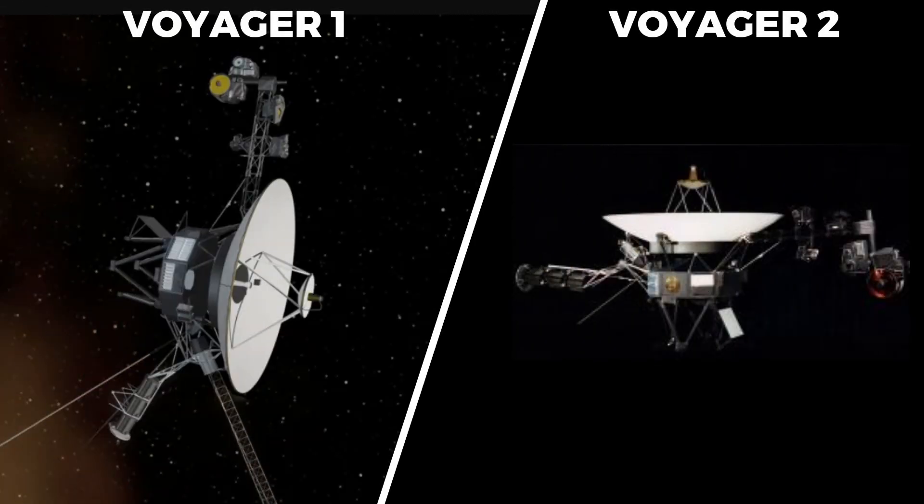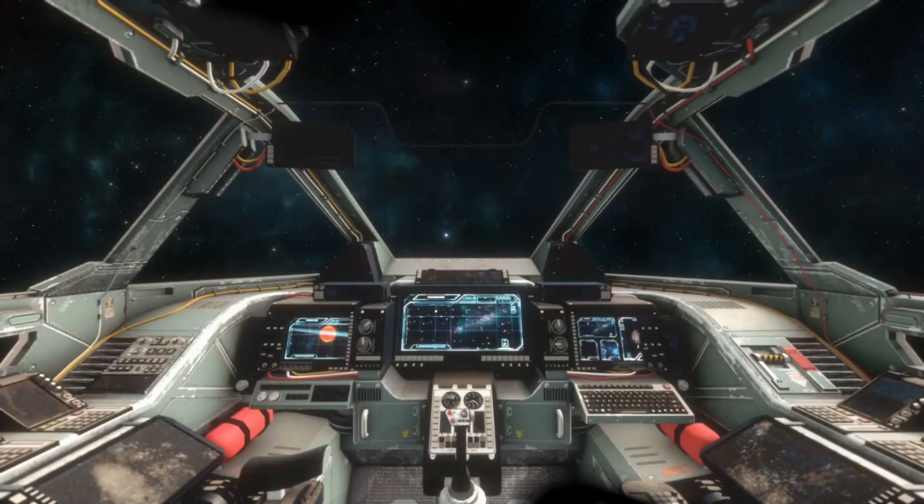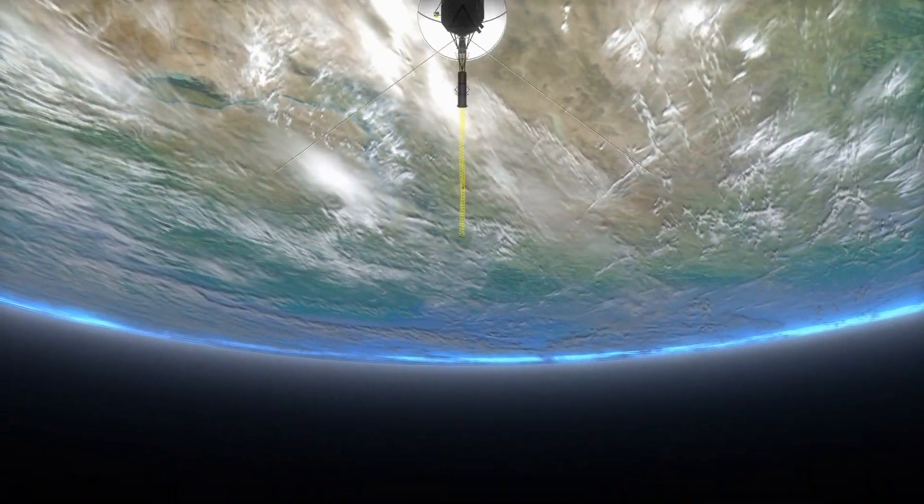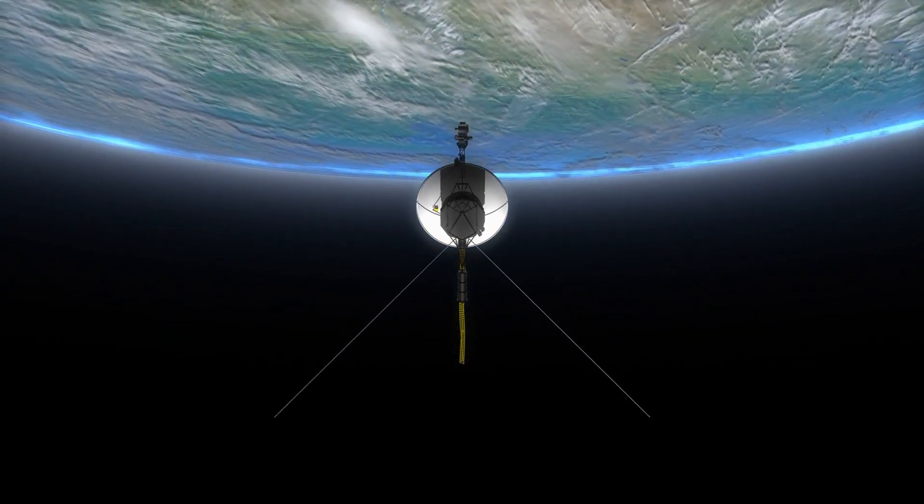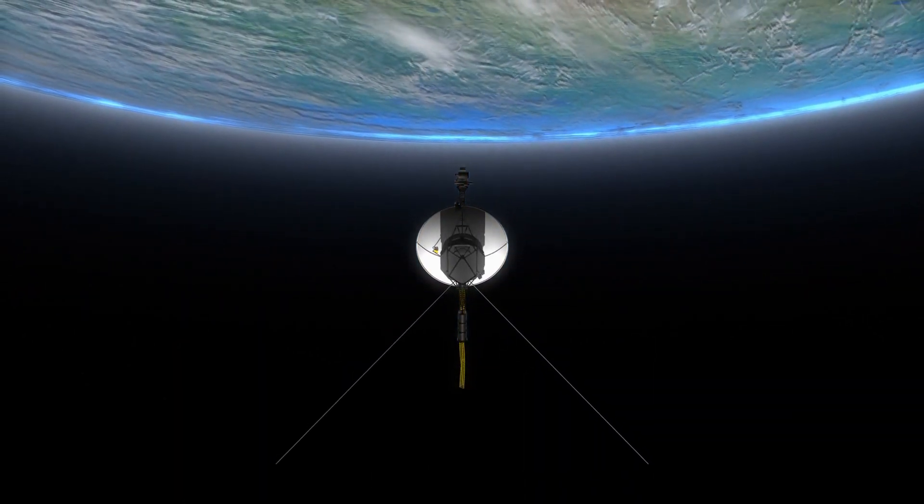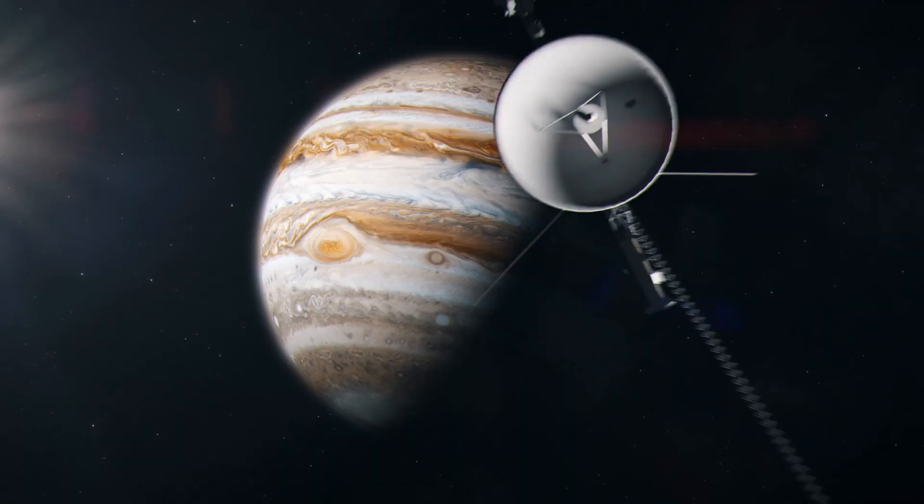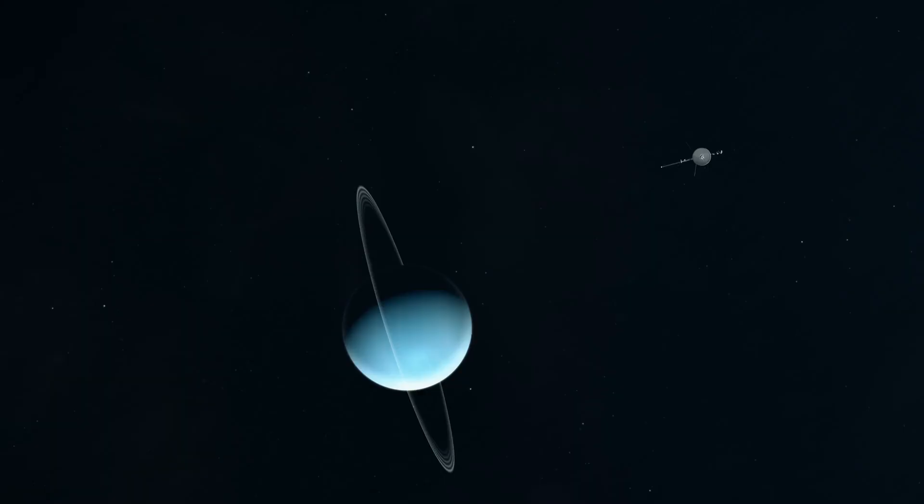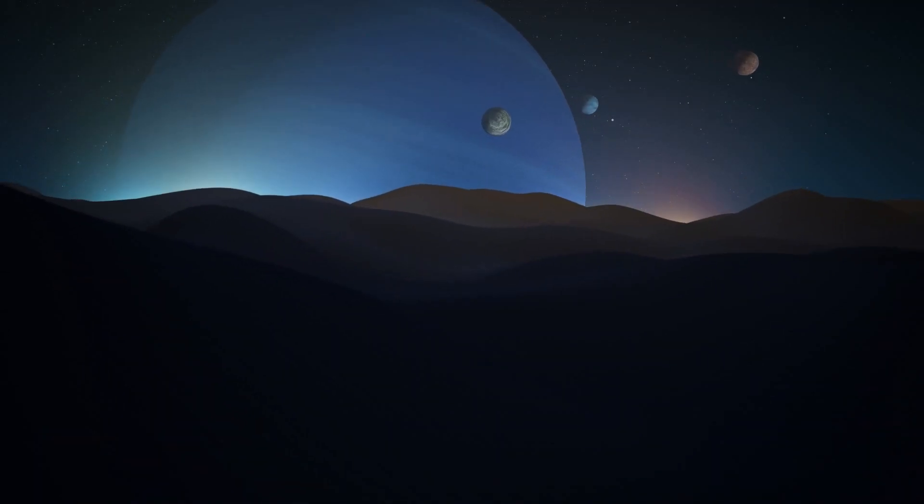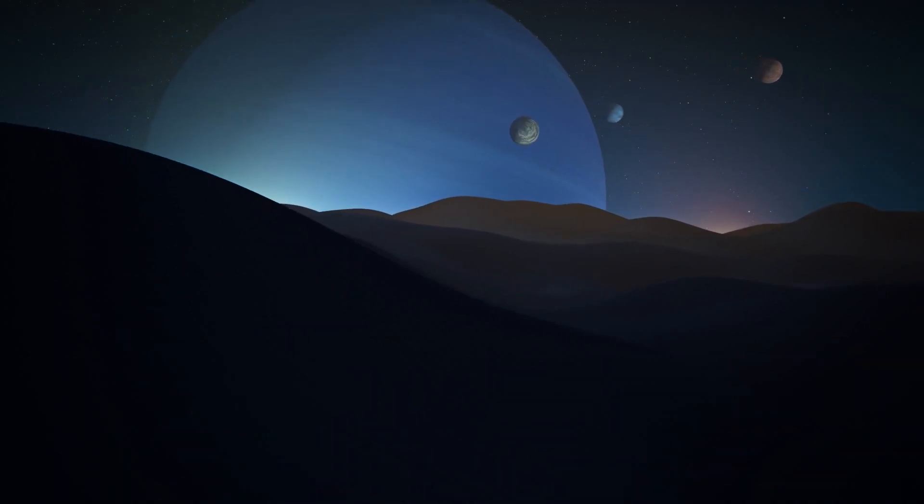NASA launched Voyager 1 and Voyager 2 in 1977, just a few weeks apart. They set out on a journey that would change the limits of space travel. These two probes had a goal to take a trip to the outer planets and beyond that had never been done before. The Voyagers were sent to study Jupiter, Saturn, Uranus, Neptune, and their moons.